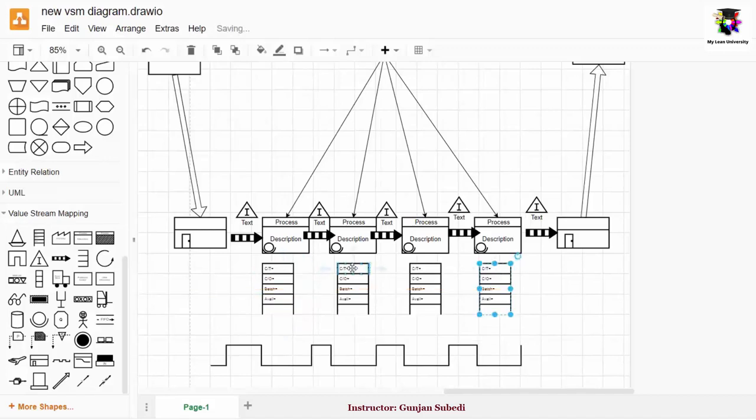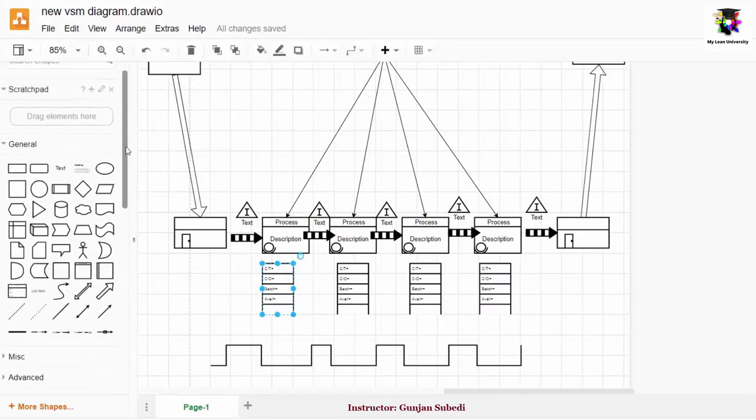So we have information regarding the cycle time, change over time, the batch number or number of batches and the equipment availability. But to add information inside these boxes, we again have to go to the general symbols and click on the text and we can add any text or number that we like.